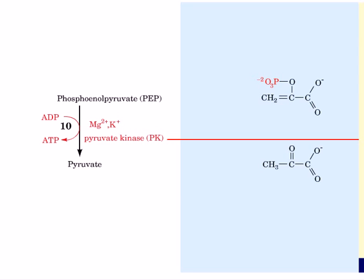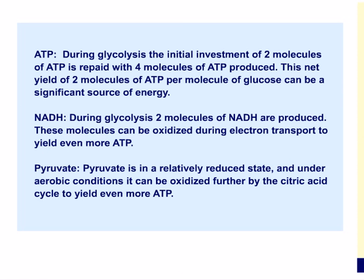This completes stage 2 of glycolysis, in which two molecules of NADH and four molecules of ATP are generated per molecule of glucose. The overall summary: glucose + 2 NAD+ + 2 ADP + 2 inorganic phosphate converts into 2 pyruvate + 2 NADH + 2 ATP + 2 H₂O + 4 H+.